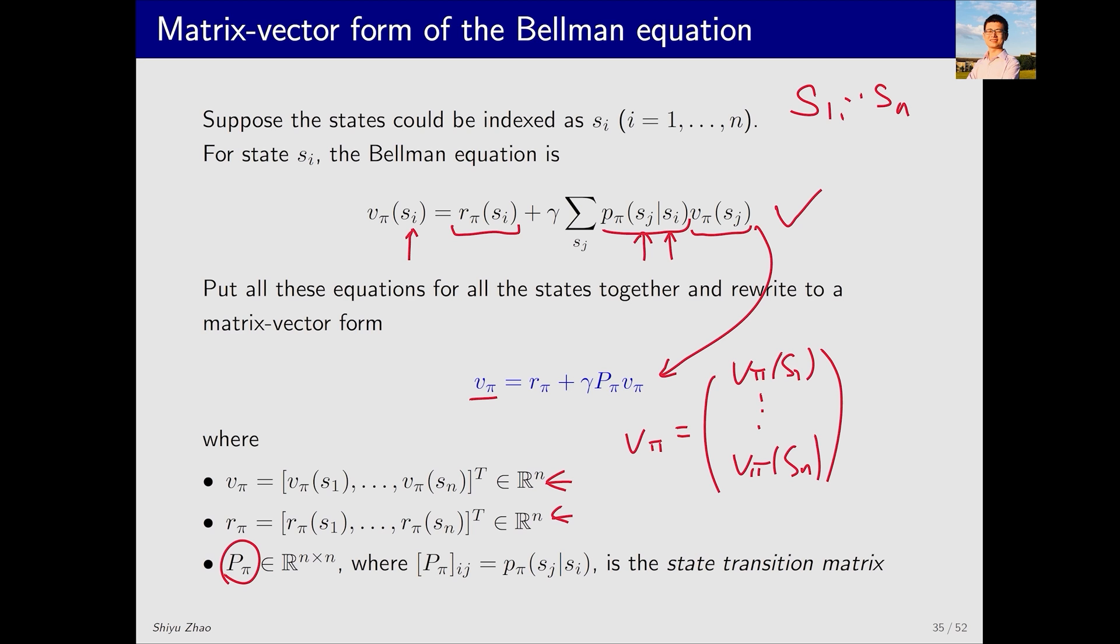P_π might be a bit more complex, but we can see it more clearly through an example. P_π_ij with brackets and subscripts ij indicates the element at row i and column j, which is the probability of transitioning from s_i to s_j. P_π, this matrix, is also known as the state transition matrix.